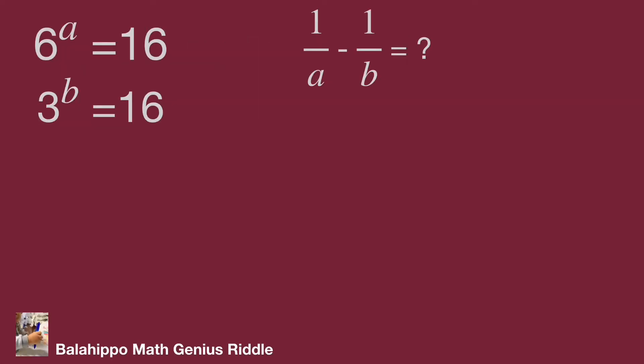There are three equations: 6 power of a equal to 16, 3 power of b equal to 16, and the other is 1 over a minus 1 over b. Check these three given informations. How to do that? There are probably several approaches to find the answer.